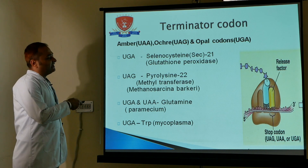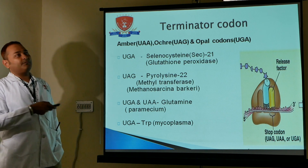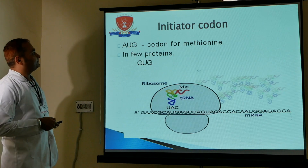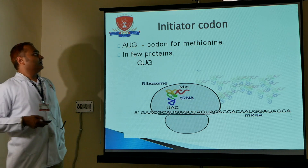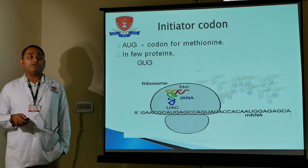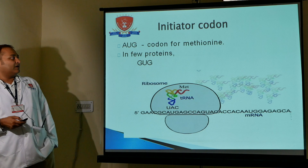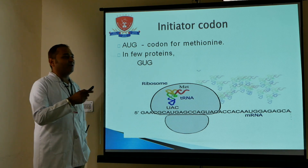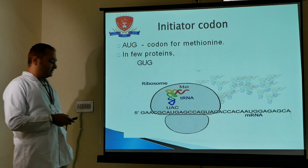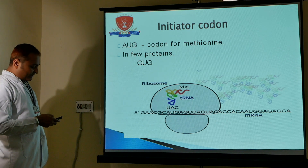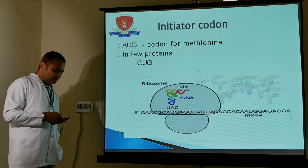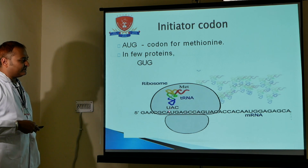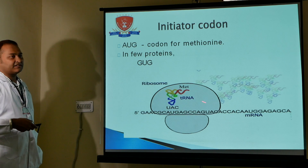In different species and different replication and transcription processes, functions can differ. The initiation codon AUG codes for methionine — this is the initiation codon for all replication, transcription, and translation. The ribosome reads the first codon AUG, then UAG, in the sequence of protein synthesis.